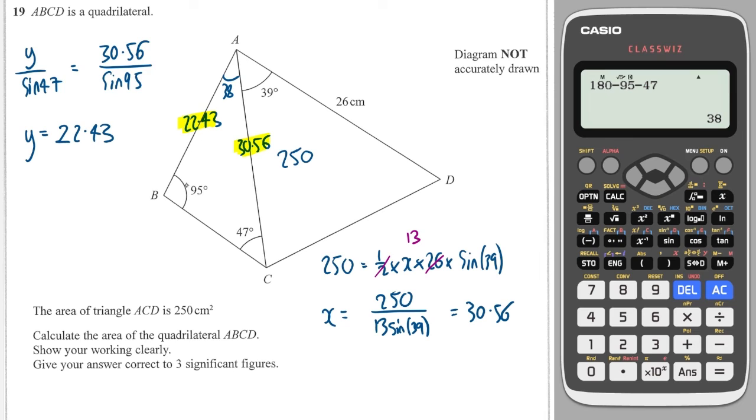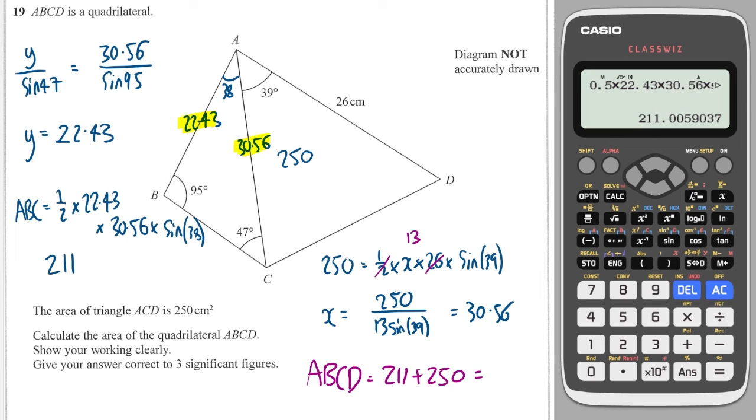So the area of this triangle ABC is equal to one half times by the two sides opposite one another times by sine of the angle in between them. So I will do 0.5 times by 22.43 times by 30.56 times by sine of 38. And I'll get an area of 211. So the total area of quadrilateral ABC is 211 plus 250 which is 461.